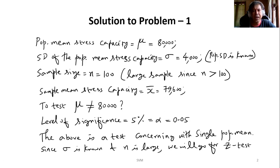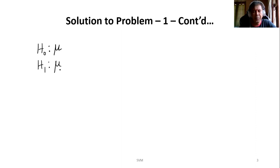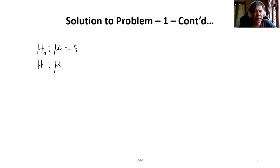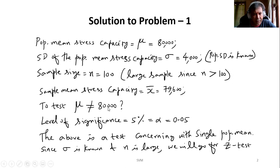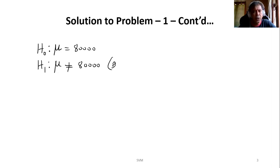The next step is to frame the hypothesis — we need to write down the null hypothesis H0 and the alternative hypothesis H1. The null hypothesis always has an equality sign: H0: mu = 80,000. The alternative hypothesis never has an equality sign: H1: mu ≠ 80,000. Since the alternative hypothesis has a not-equal-to sign, the value can be less than 80,000 or greater than 80,000 — so this becomes a two-tailed test.